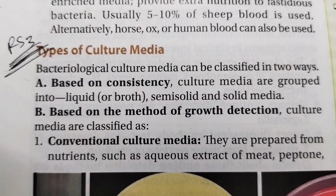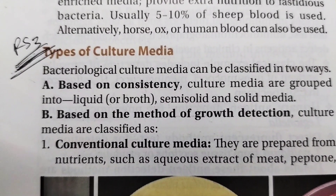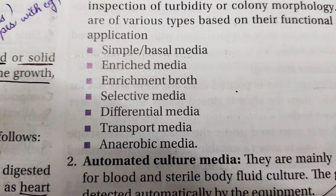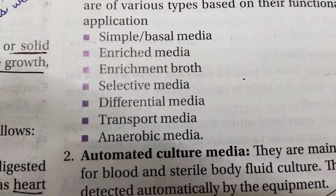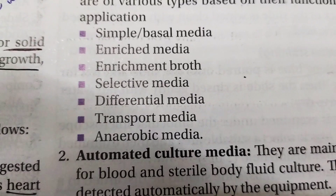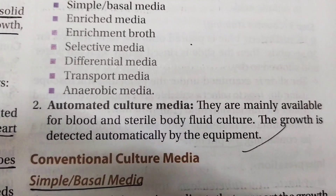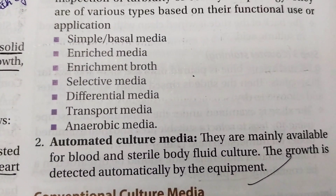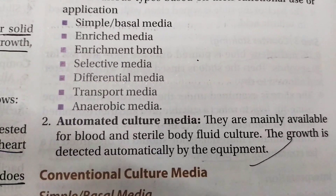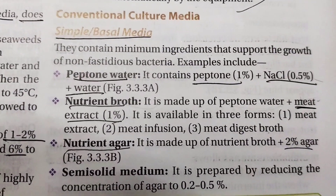Based on the method of growth detection, we have conventional cultural media. Conventional cultural media include: simple basal media, enriched media, enrichment broth, selective media, differential media, transport media, and anaerobic media. After conventional cultural media, we also have automated cultural media.